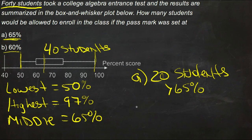For question B, we want to know how many students will get in if they set the pass mark at 60%. Well, 60% is right here, at the bottom of the square part of our box-and-whisker plot.